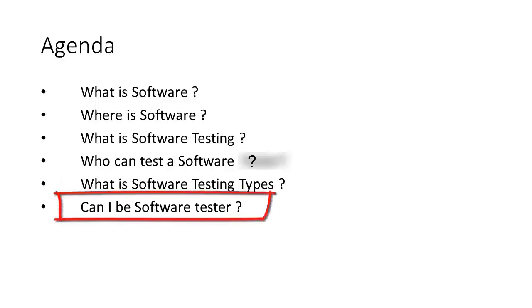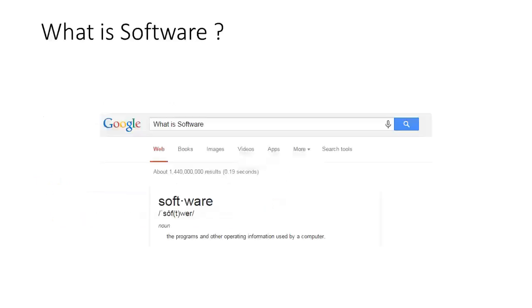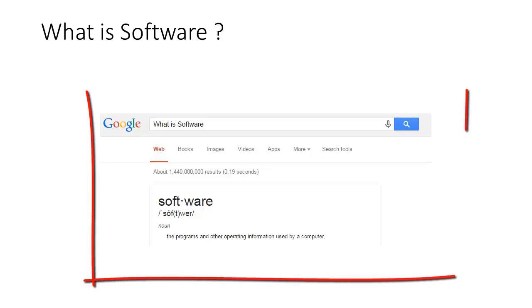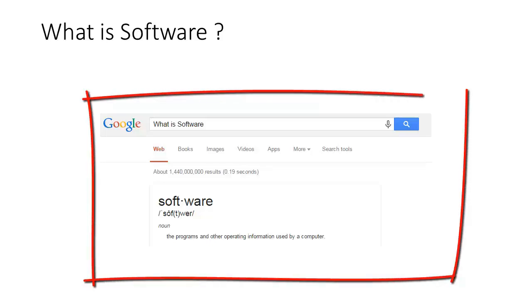First topic: what is software? Software has a lot of definitions. Google tells us it is 'the programs and other operating information used by a computer.' This is a very technical definition. Simply, software is a program, application, system, or portal — anything of this sort is software.